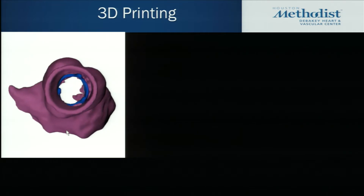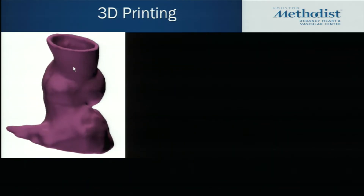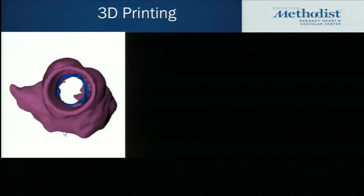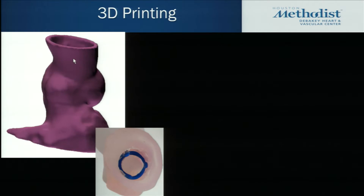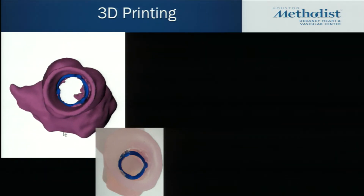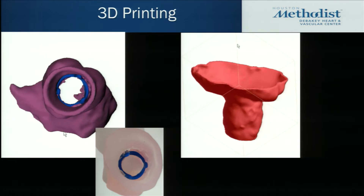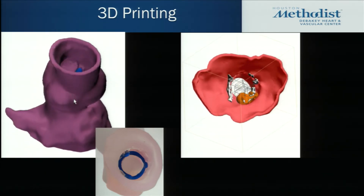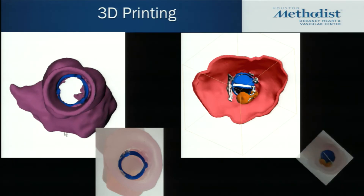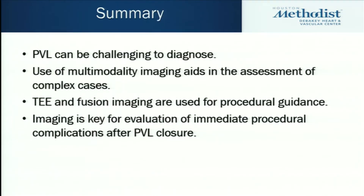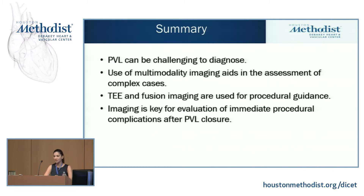Another thing we do when planning these procedures is 3D printing, using CT data in addition to TEE data to create patient-specific 3D models. This helps with determining the location, size, and the size of the percutaneous device used for closing the defects. In summary, PVLs can be challenging to diagnose and the use of multimodality imaging aids in the assessment of complex cases. TEE and fusion imaging are used for procedural guidance, and imaging is key for identifying immediate procedural complications after PVL closures.